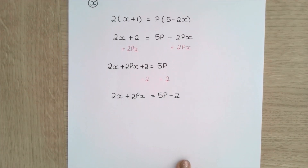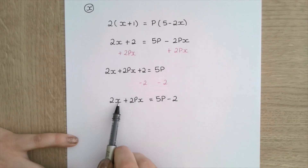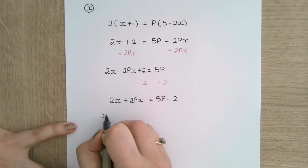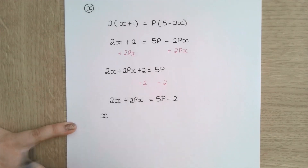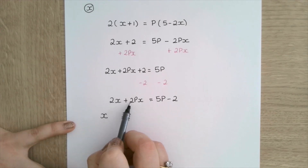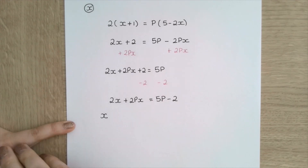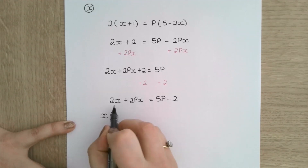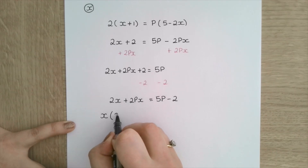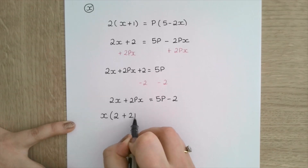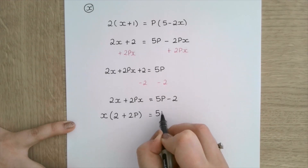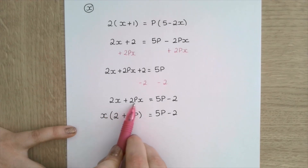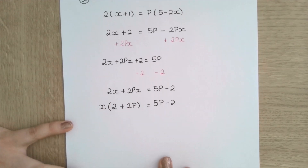Now because I'm making x the subject I'm going to factorize this and pull out x because it's a common factor in both of these terms. I know I have also got the factor of 2 here but I'm not going to pull that out because I just want to make x the subject. So when I factorize, I'm left with x brackets 2 plus 2p equals 5p minus 2.